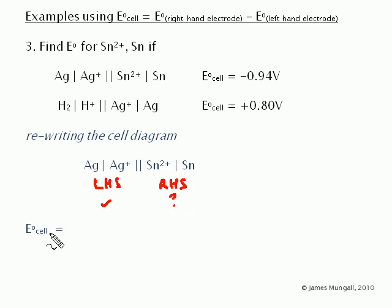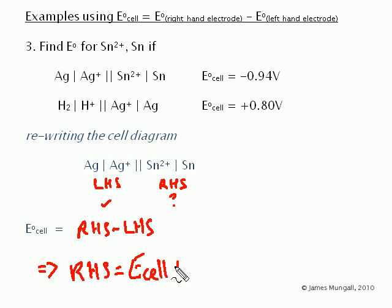It's a matter of writing out the formula. E_cell = right-hand side - left-hand side, and then rearranging this for the right-hand side. So, right-hand side = E_cell + left-hand side.